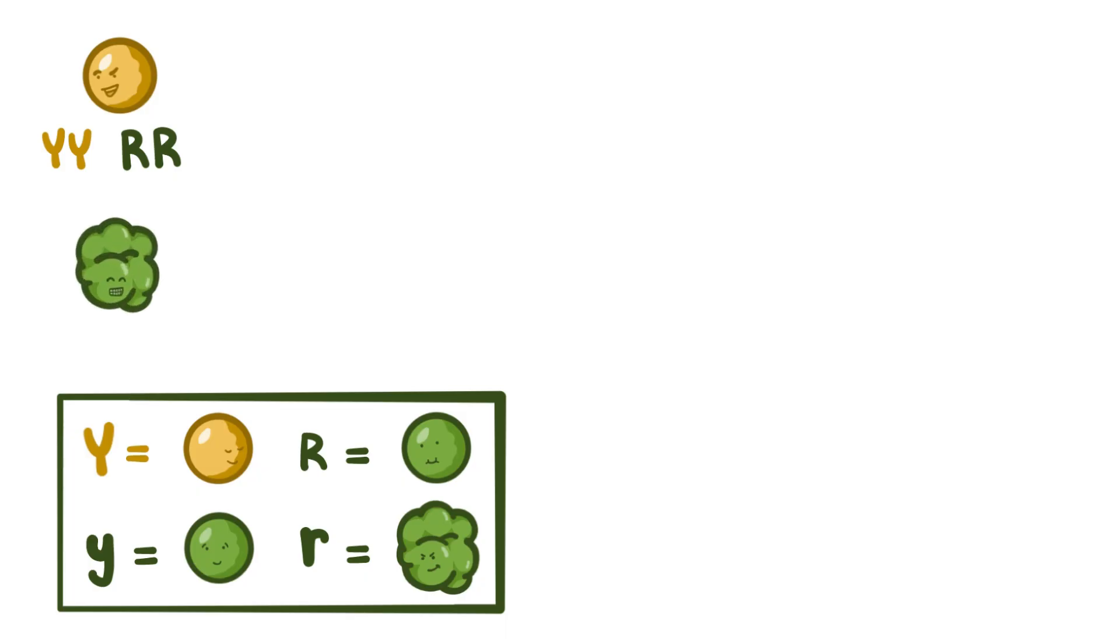The other plant was homozygous recessive for both traits, which means that it had little y, little y genotype for color trait, and little r, little r genotype for texture trait. So its phenotype was that it had green, wrinkled seeds.